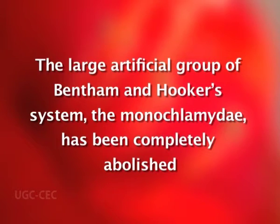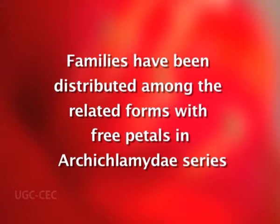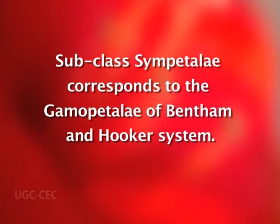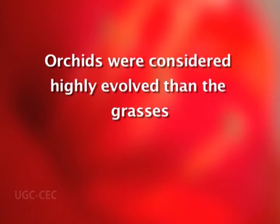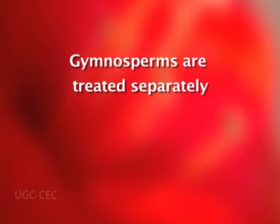Now the merits and demerits of the Engler and Prantl system of classification. Merits: First, the large artificial group of Bentham and Hooker's system — the Monochlamydeae — has been completely abolished and its families have been distributed among the related families with free petals in the Archichlamydeae series. Second, subclass Sympetalae corresponds to the Gamopetalae of Bentham and Hooker's system. Third, the orchids were considered highly evolved compared to grasses. Fourth, gymnosperms are treated separately.